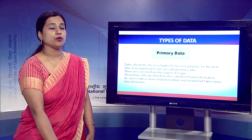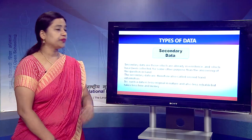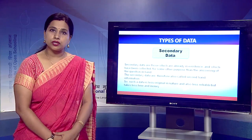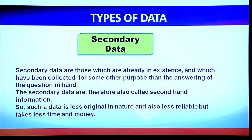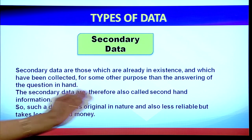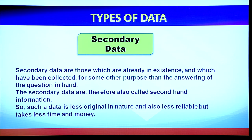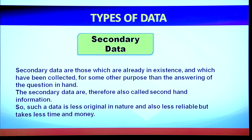Whereas secondary data are those data which are already in existence and have been collected for some other purpose by the investigator. This is also known as second-hand information. This data is less reliable, less original in nature, and takes less time and money.